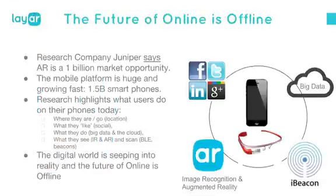Augmented reality and what Layer does is part of a bigger trend — we call it 'the future of online is offline.' According to Juniper Research, AR is a one-billion-dollar market opportunity. With 1.5 billion smartphones, we can now know where people are, what they like socially, what they see through image recognition and AR. The digital world is seeping into reality. And for those with Google Glass, Layer runs on it — we're doing early betas, and it's part of something big.